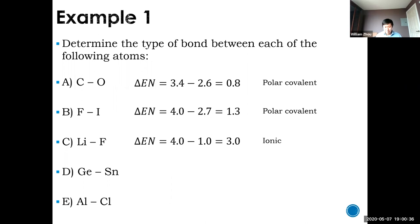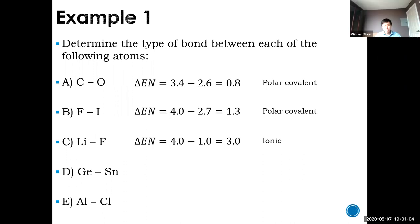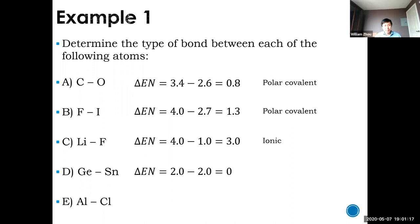Germanium and tin: if you use the grade 10 definition, germanium is a metalloid if not a metal, and tin is definitely a metal. So you have two metals — how can two metals bond? Using our new definition, if you look them up, they're both situated in the p-block and they both have an electronegativity of about 2.0. Same electronegativity means a zero difference, so that would be nonpolar covalent. Your mind is blown — two metals have a covalent bond.